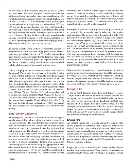Emergency descents: An emergency descent is a maneuver for descending as rapidly as possible to a lower altitude or to the ground for an emergency landing. The need may result from an uncontrollable fire, avoidance of other aircraft, weather, or any other situation demanding an immediate and rapid descent. The objective is to descend the aircraft as quickly as possible within the structural limitations of the aircraft. Simulated emergency descents should be made in a turn to check for other air traffic below and to look around for a possible emergency landing area. A radio call announcing descent intentions may be appropriate. When initiating the descent, a bank angle of approximately 45 to 60 degrees should be established to maintain positive load factors (G-forces). Generally, the steeper the bank angle, the quicker the descent, but caution should be exercised with steep bank angles for extended periods as high G-forces and rotation can cause disorientation or motion sickness.